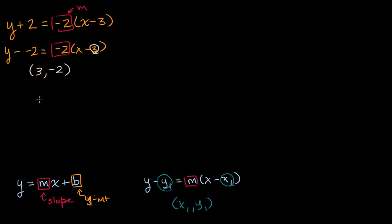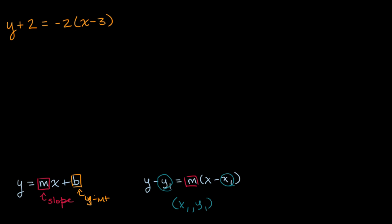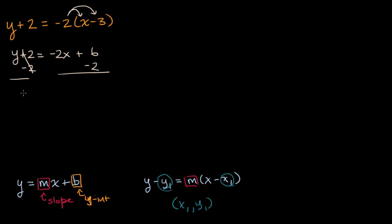Another way to approach this is to just manipulate the equation so that we get into slope-intercept form. The first thing my brain wants to do is distribute this negative two. If I do that, I get y plus two is equal to negative two x plus six. Then I can subtract two from both sides, and I get y is equal to negative two x plus four. Here I am in slope-intercept form, and my m, the coefficient on the x term, is my slope — so my slope is negative two.